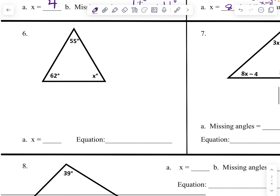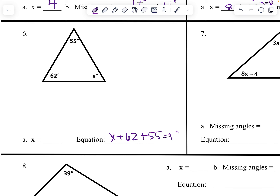Next: x plus 62 plus 55 equals 180. So x plus 117 equals 180. Subtract 117 and x equals 63 degrees.